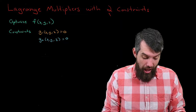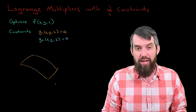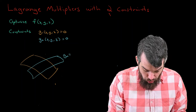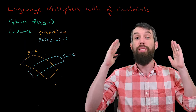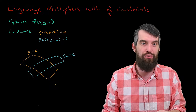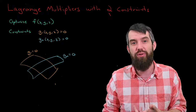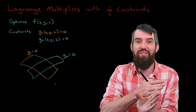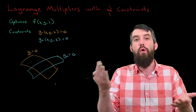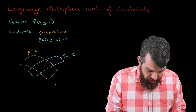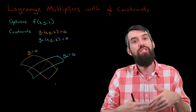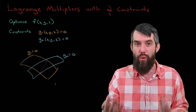Let me try to have a bit of a visual representation. I'm going to draw a generic surface representing g1 equal to zero, and another surface representing g2 equal to zero. If I take two planes and intersect them, what you get is a line of intersection. Two surfaces, when you overlap them, are going to intersect along some curve. The generic type of intersection we're going to focus on is indeed a curve.